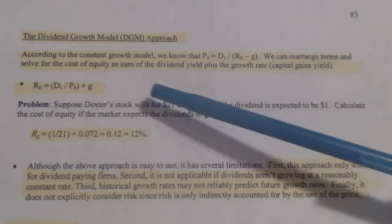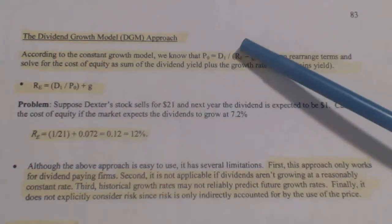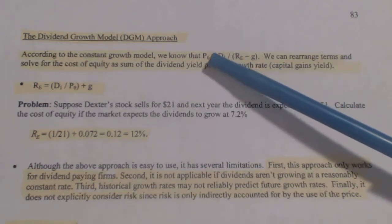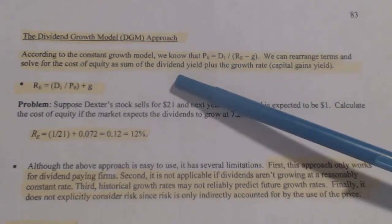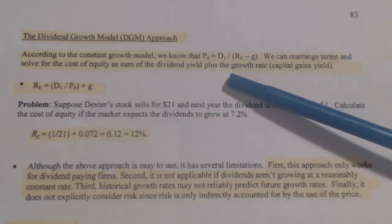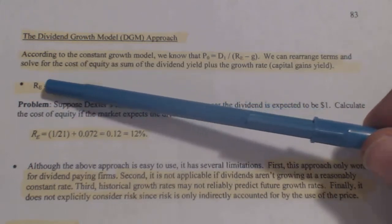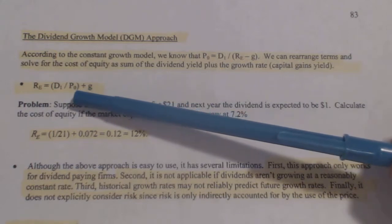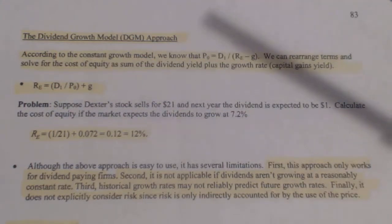We can rearrange the terms and solve for the cost of equity as the sum of the dividend yield. The dividend yield is basically the dividend divided by the price. That's going to give you the dividend yield plus the growth rate. So R, the return for equity, equals the dividend from year one over the price at year zero, plus the growth rate of the dividend.